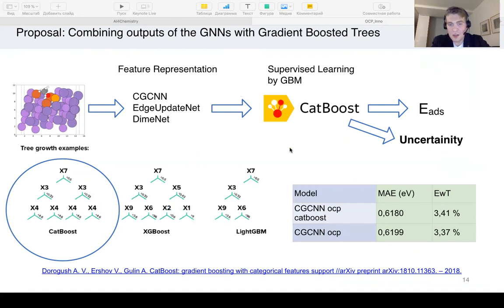The last approach we provide is collaboration between graph representations and supervised learners like Gradient Boosting. As the Gradient Boosting algorithm, we chose CatBoost, which creates symmetrical trees and boosts them in a weighted way. Here you can see a small improvement both in mean absolute error and energy error within threshold. But the main advantage is the ability to extract uncertainty from the CatBoost model, which can be very useful for high-throughput screening based on active learning.